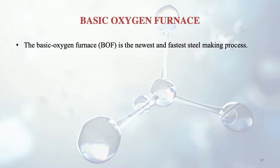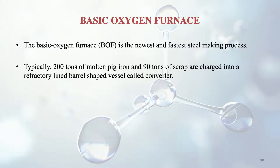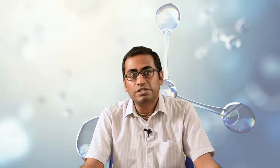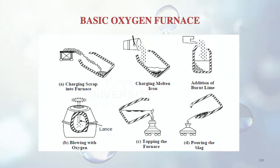The third furnace is the basic oxygen furnace — the newest and fastest steel making process. Typically 200 tons of molten pig iron and 90 tons of scrap are charged into a refractory-lined barrel-shaped vessel called the converter. Pure oxygen is then blown into the furnace for about 20 minutes under a pressure of about 1250 kPa through a water-cooled lance.